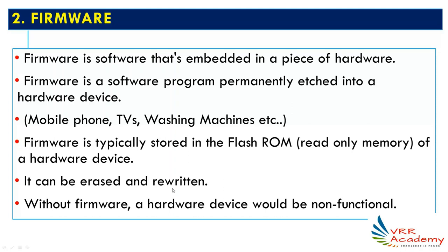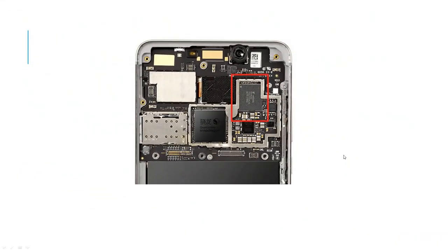Flash ROM can be erased and rewritten — you can read, write, and change it whenever you want. Without firmware, your hardware device would be non-functional. For example, inside a mobile phone there is a ROM chip. In that read-only memory, software is written by the manufacturer. So the company producing the device writes the programs in this chip. This is the firmware in a mobile phone.